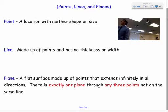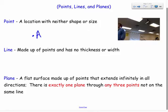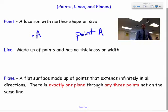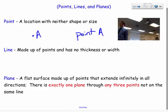Starting with a point — everybody knows what a point is. I'm going to draw a point and call it A, so that's point A. If I want to label or name that point, I would write out 'point A.' That's all I would call it. Lines are a little different.